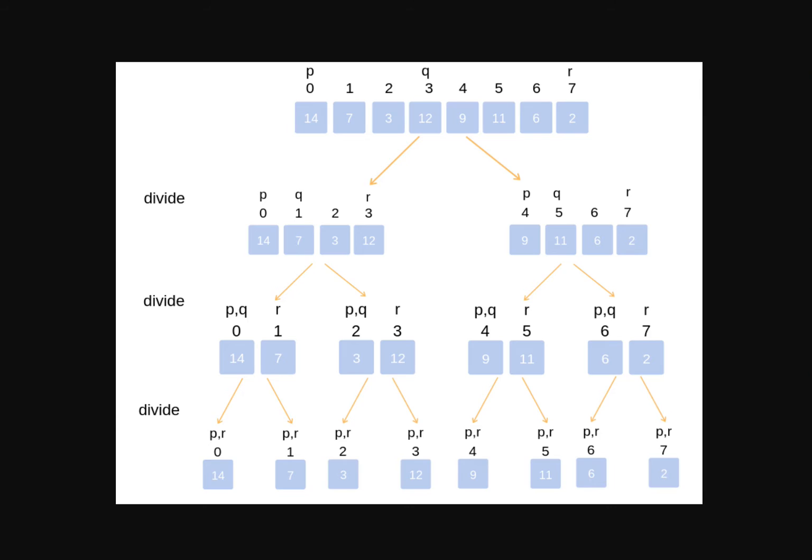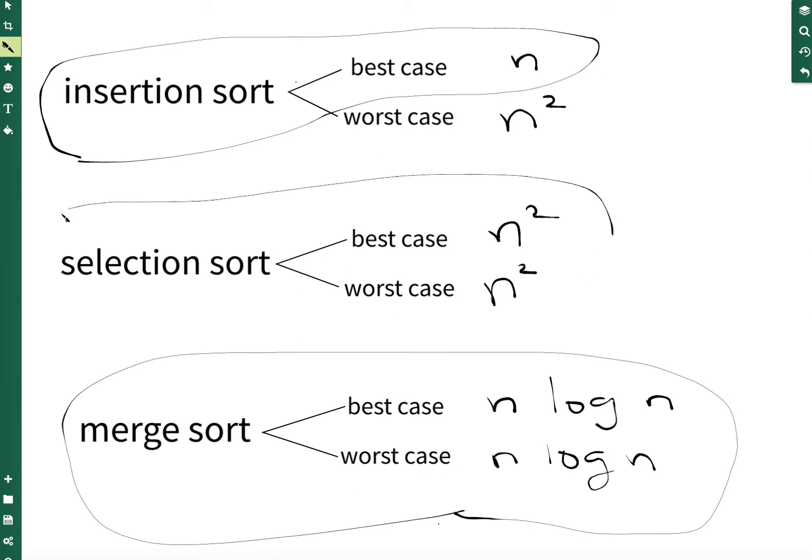So that's the first thing that we should think about, right? Of course, selection is the worst. We should not even consider it when asked the question, which sort should we use? The question really is between insertion and merge, and it hinges on is the list sorted or is it partially sorted? If that's true, insertion would be the way to go. If not, merge would be the way to go.